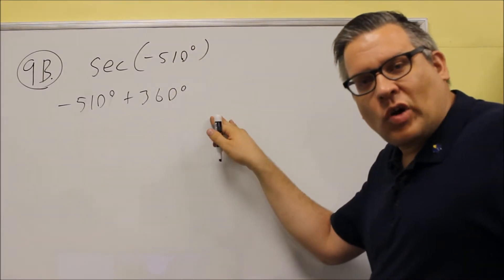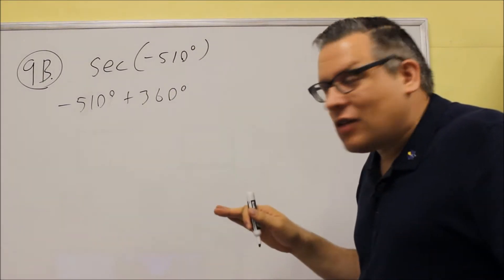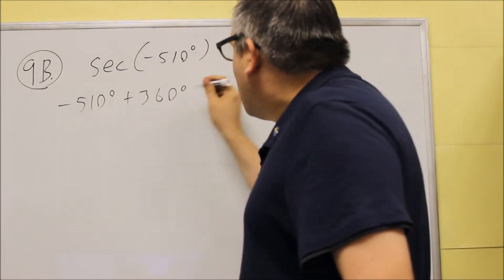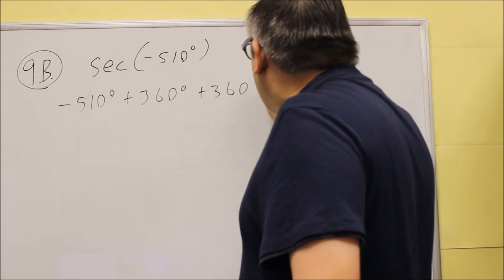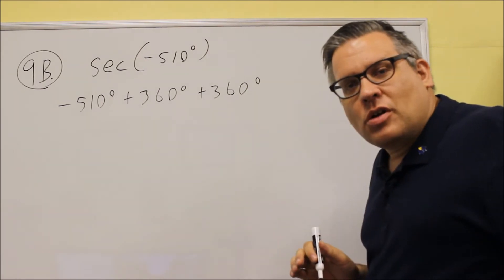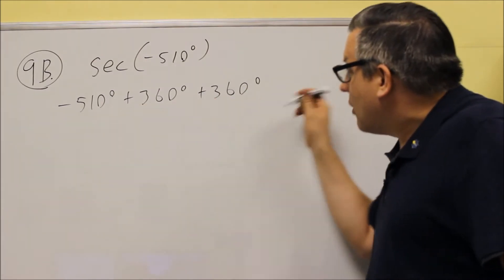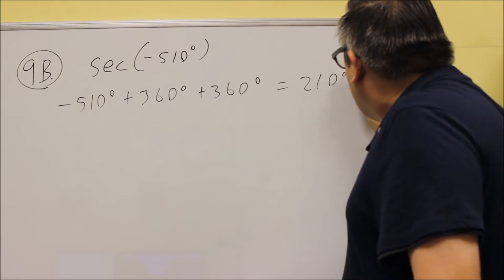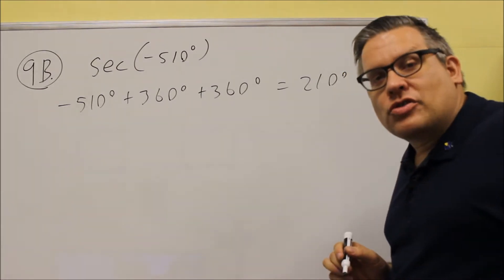So if we add 360 once, it's still going to be a negative angle. So we have to add one more 360. So then if we add one more 360, it does become positive. So when we add that all together, you get positive 210 degrees.